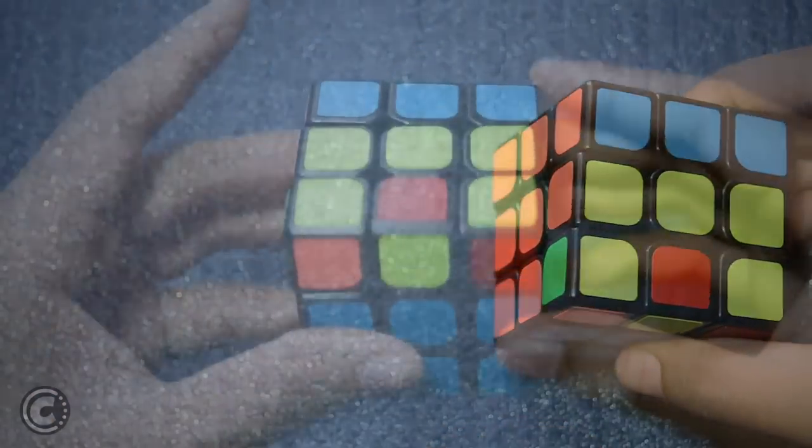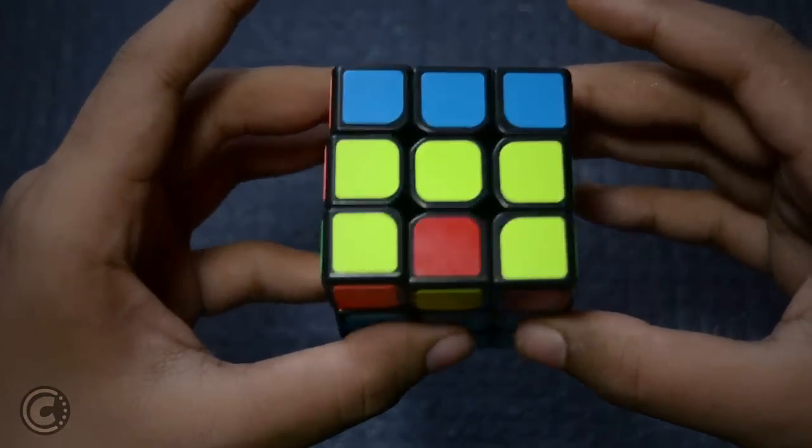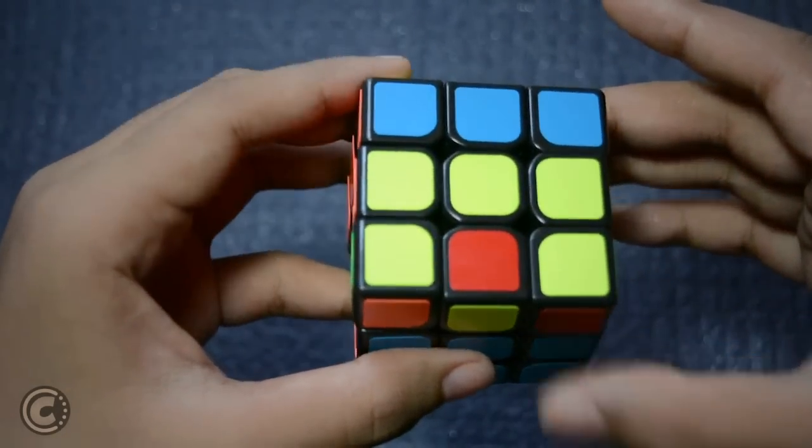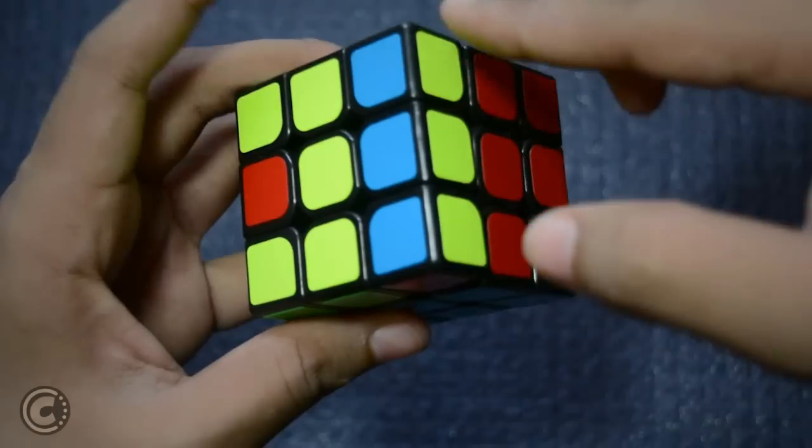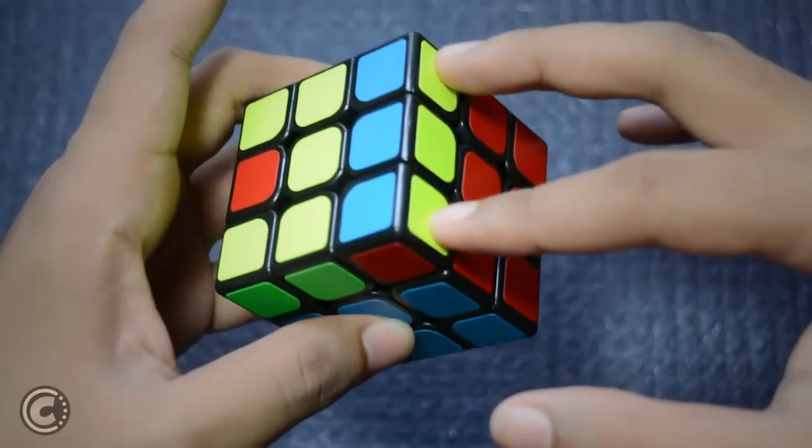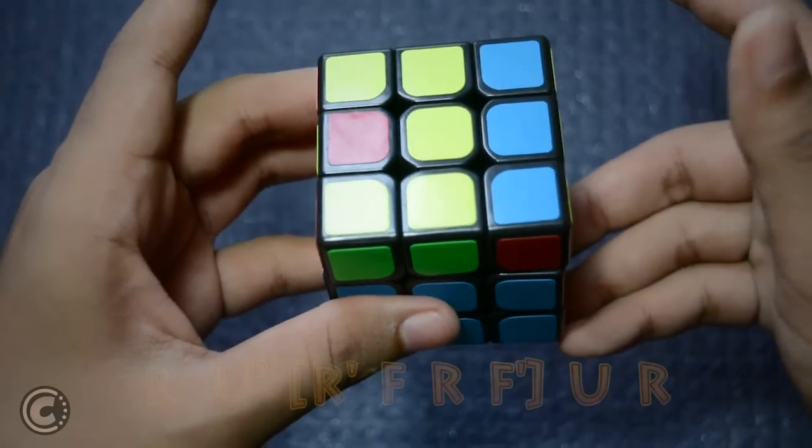So this is our first C-OLL case. In this, you don't have a sticker facing towards the side. So in this case, you have this whole complete block. And how you solve this case is that you keep the block towards the right and then you do this algorithm.